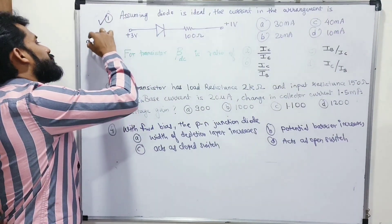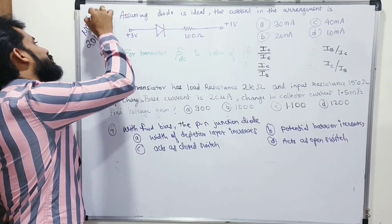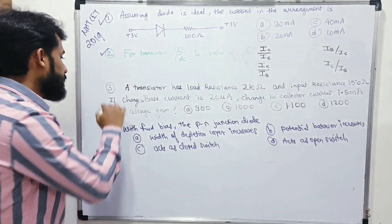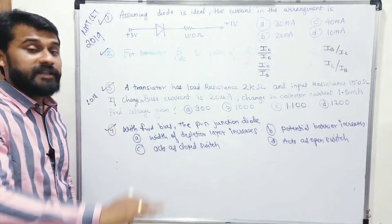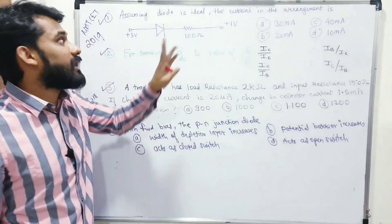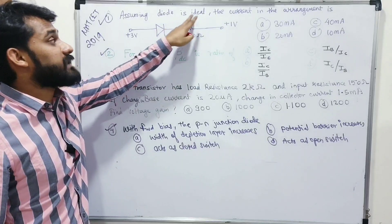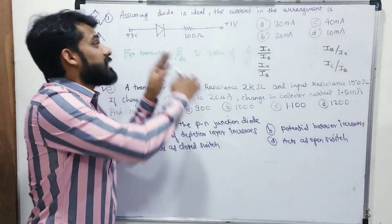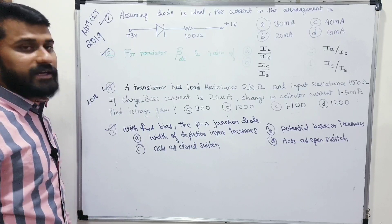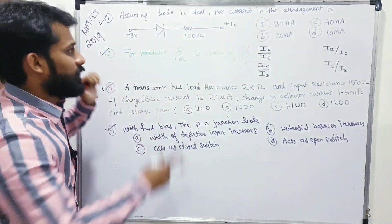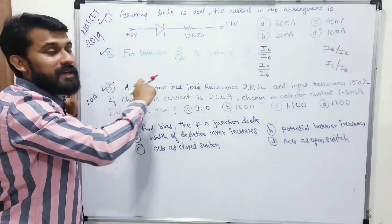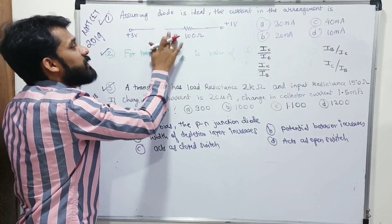Now solving MCQs from previous year CET exams. These two questions are from 2019 MHT CET. First question: assume the diode is ideal (zero resistance). Determine whether the diode is forward or reverse biased. The positive terminal is connected to higher potential and negative to lower potential, so the diode is forward biased.